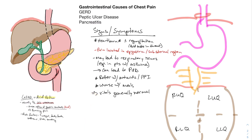GERD can also lead to peptic ulcer disease. When you have increased acid production, the acid can go upwards and cause esophageal ulcers, but it can also go downwards into the duodenum. The duodenum is not used to high acidic environments — the pancreas excretes enzymes to neutralize the acid, and if there's too much acid and the pancreas can't keep up, ulcers can form.